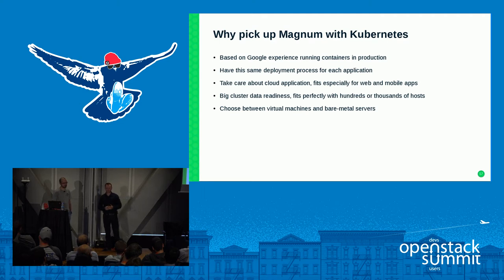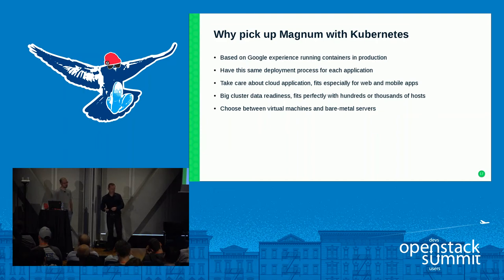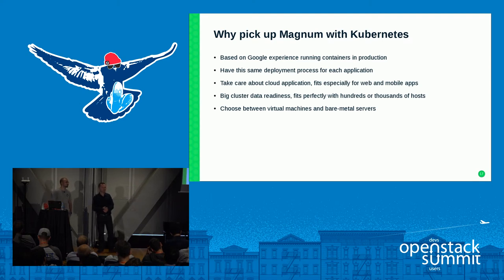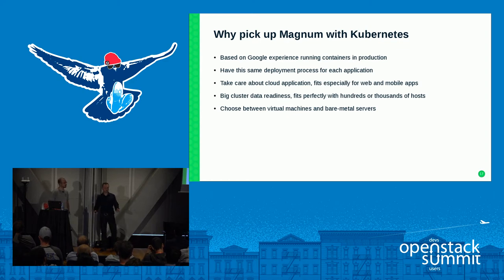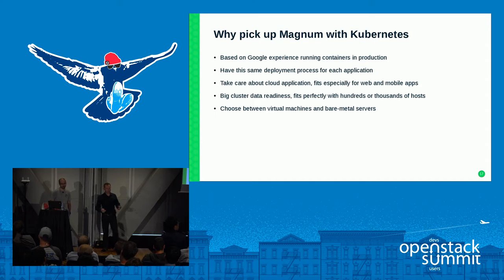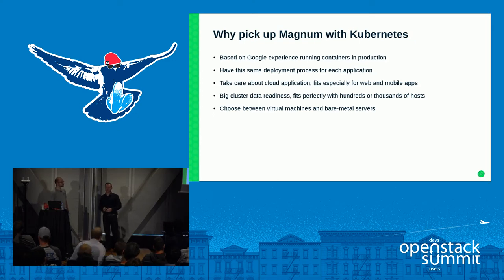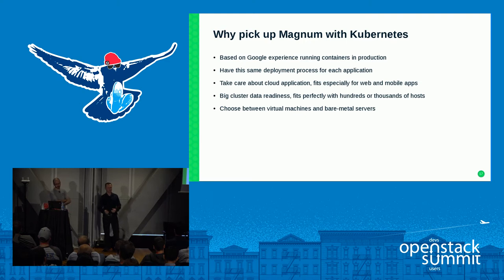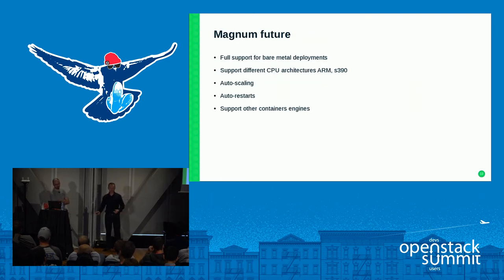Why should you pick Magnum with Kubernetes? It's based on Google's experience running containers in production. Once we migrate our application to Kubernetes manifests, we always have the same deployment process, making the application really portable — able to migrate between different clouds. We take care only of the application. Kubernetes is ready for really big cluster deployments — hundreds or a couple of thousands of nodes — and you can choose between virtual nodes and bare metal.